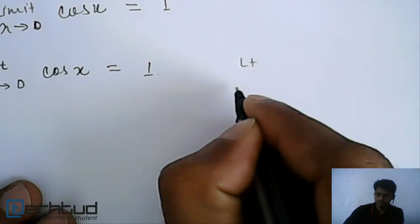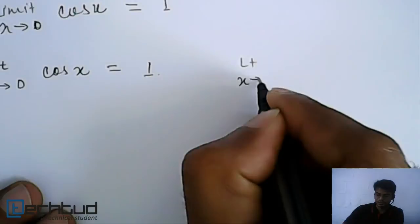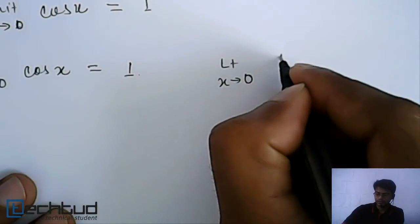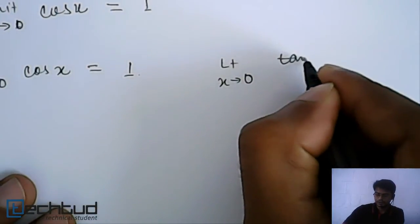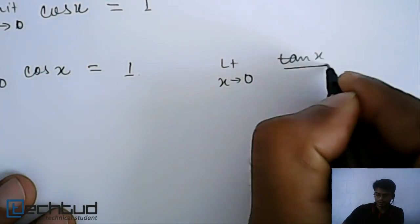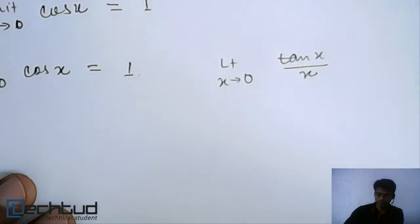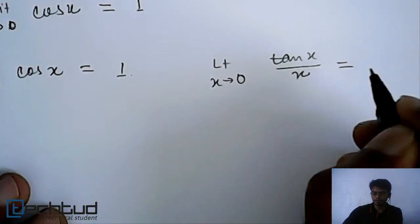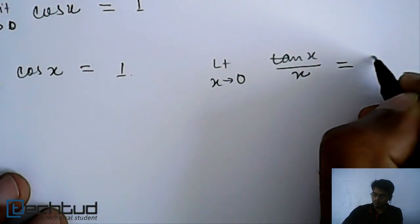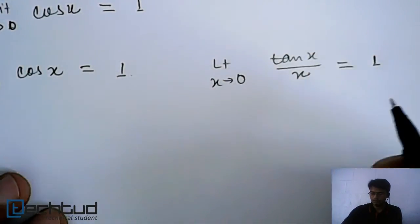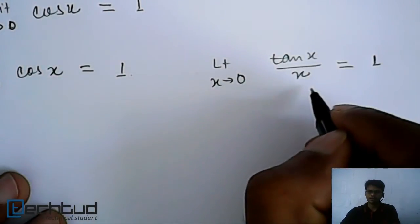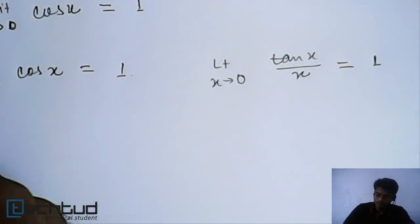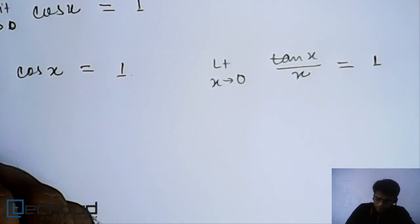Another result is very similar to sin(x)/x. It is: limit as x tends to zero of tan(x)/x, which is again equal to 1, similar to the sin(x) result.